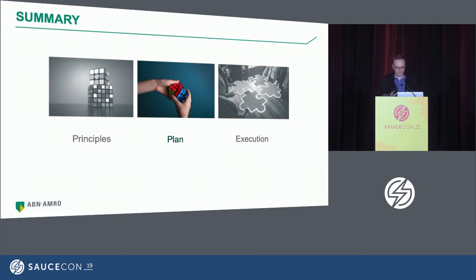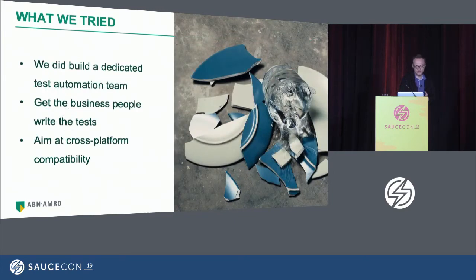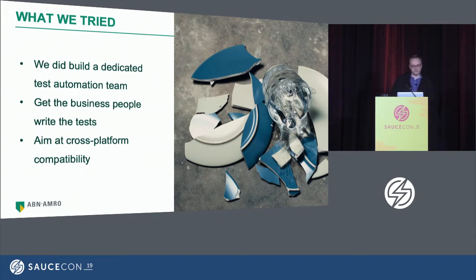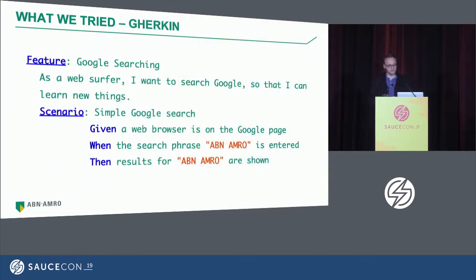Based on these principles, how do we plan it? Let's take a step back and see what we tried in the past. In 2016 and 2017, we created a complete full test automation team. We had requirements: we wanted the business people, the POs, and the business analysts to start writing the tests — they write the story and can also write the test that maps to it. And our test automation team aimed to have a full cross-platform tool.